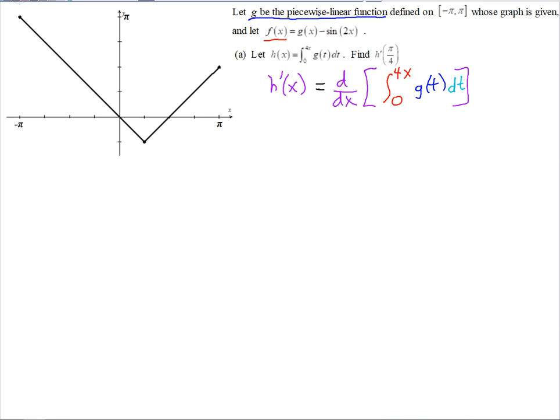The derivative and integral are reverse operations, so they essentially cancel out. Except here, it's not just x here, it's 4x. So that's like our function inside. Notice the constant is the lower limit, so there's no need to flip the lower and upper limits. But that's the function inside, so we do need to use the chain rule.